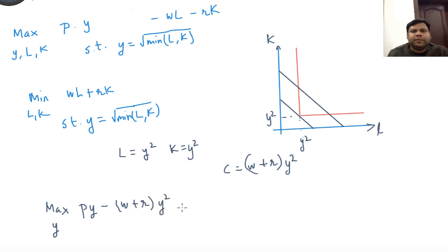Now take the derivative of this with respect to y and set the derivative equal to 0 to get the profit maximizing choice.